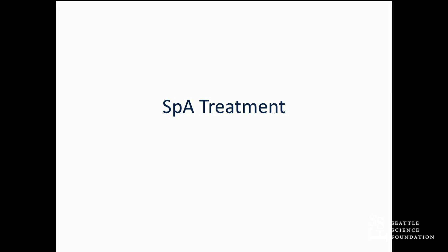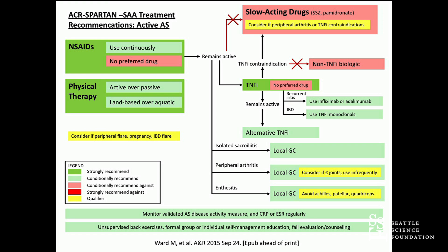To end with a couple of slides on treatment: these are the ACR criteria for treatment, and the key take-home message is that the predominant treatment modality is biologic therapy — either TNF inhibitors or interleukin-17 inhibitors. We also use non-pharmacologic approaches such as physical therapy and exercise. In certain situations — say, when a patient has concomitant uveitis or inflammatory bowel disease — we select monoclonal TNF inhibitor antibodies specifically.